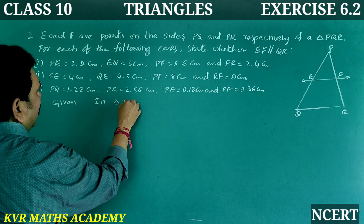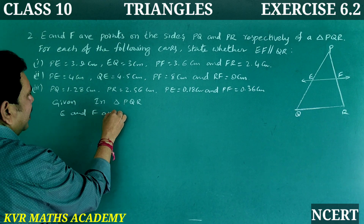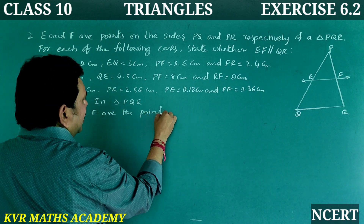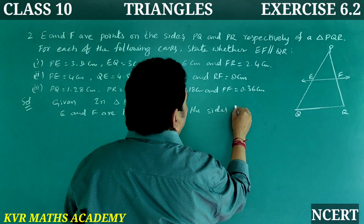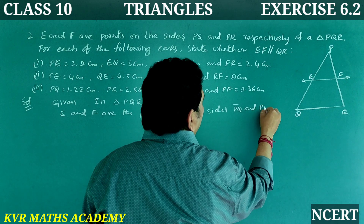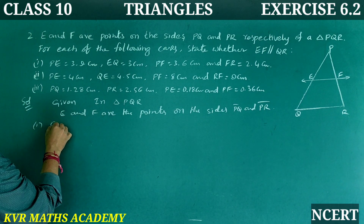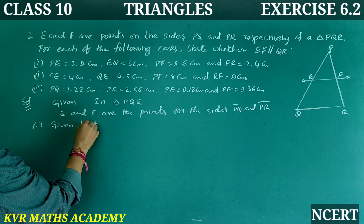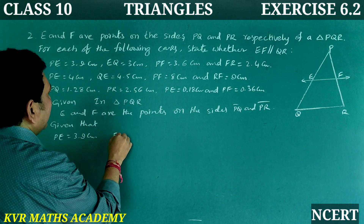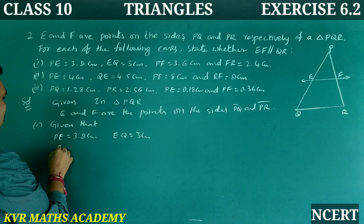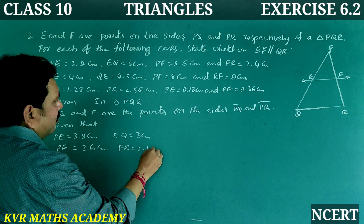In triangle PQR, E and F are points on sides PQ and PR. Case 1 — Given: PE is equal to 3.9 centimeters, EQ is equal to 3 centimeters, PF is equal to 3.6 centimeters, and FR is equal to 2.4 centimeters.